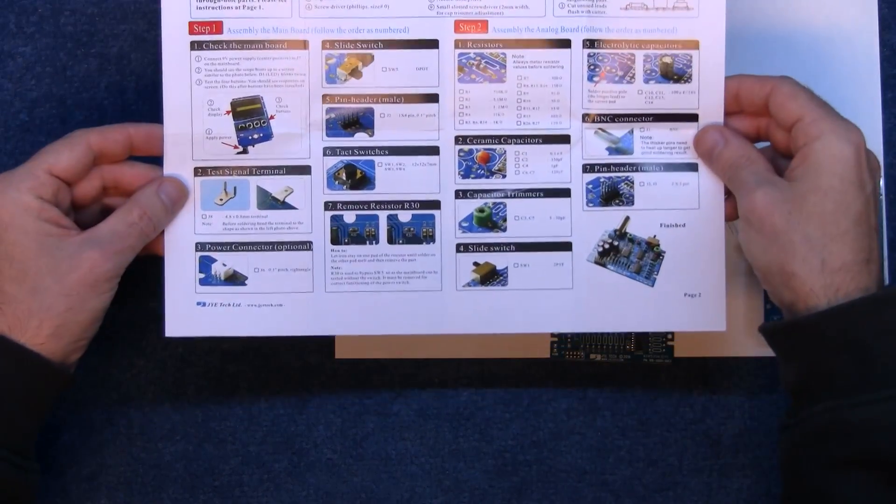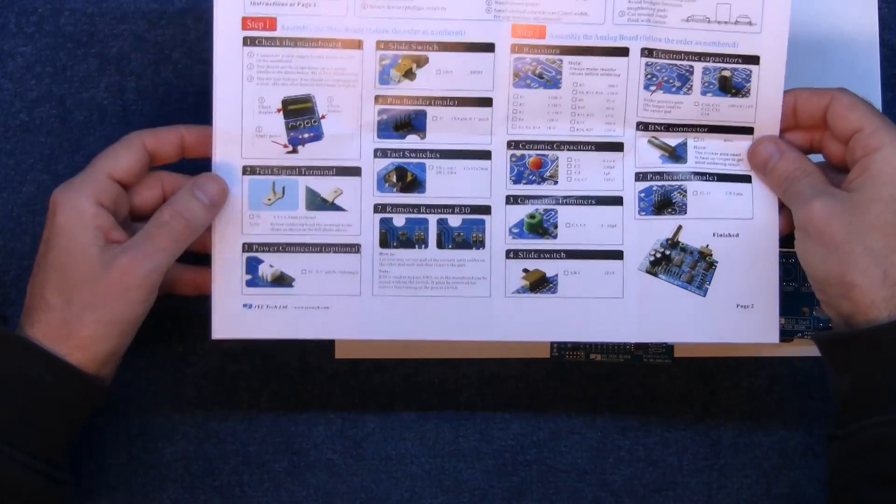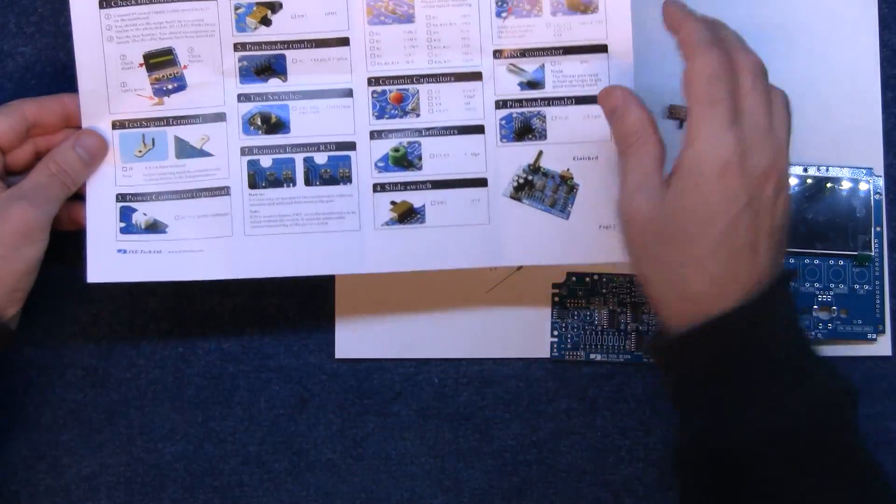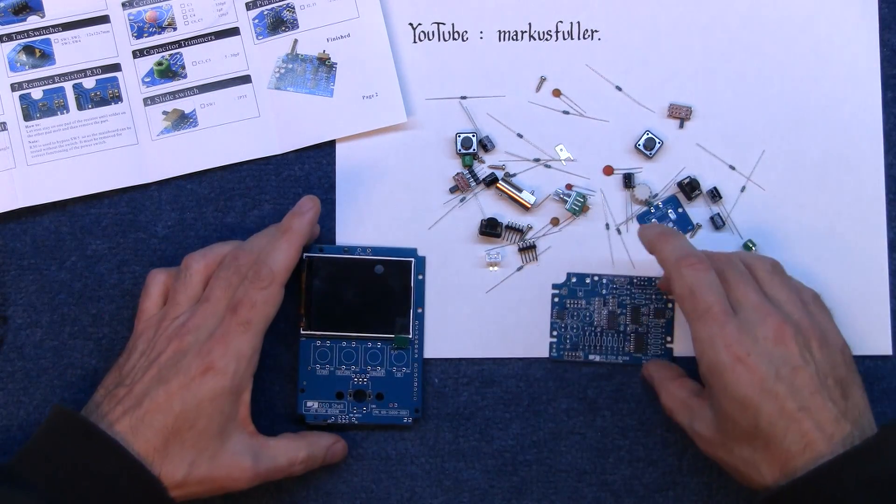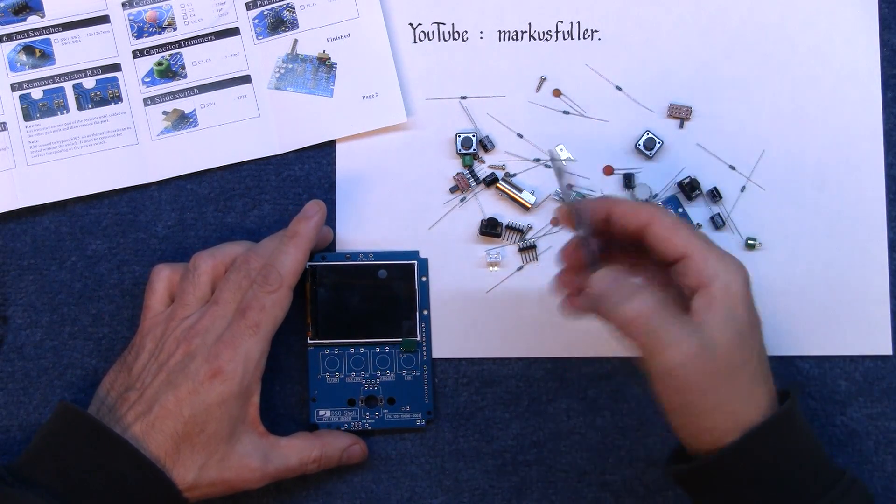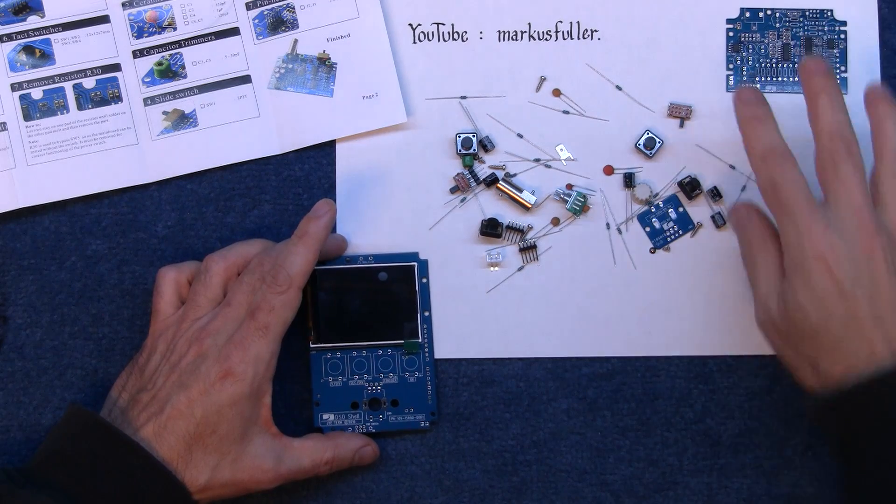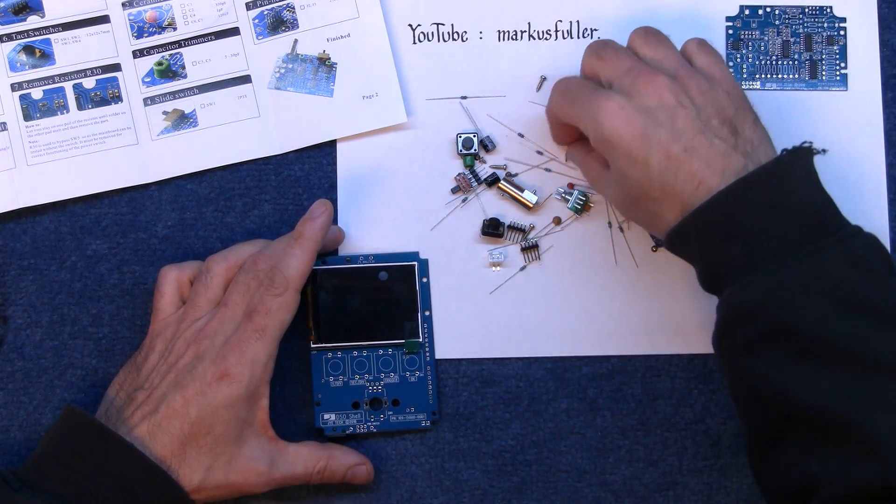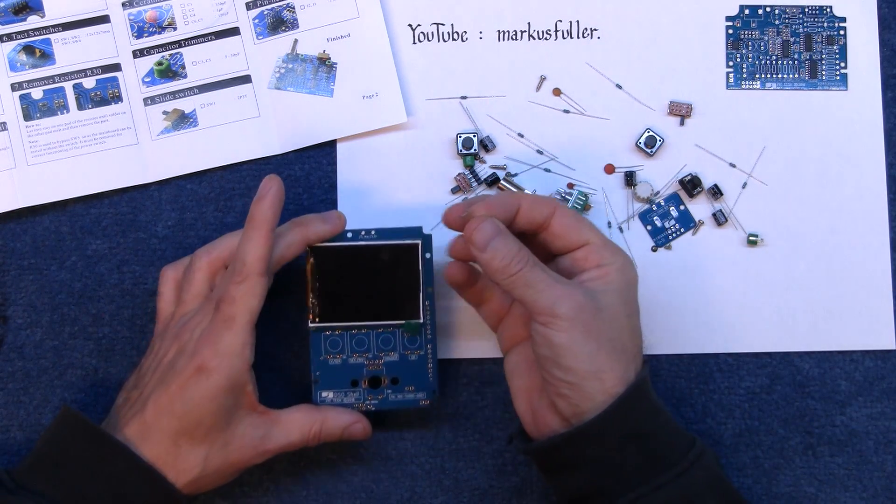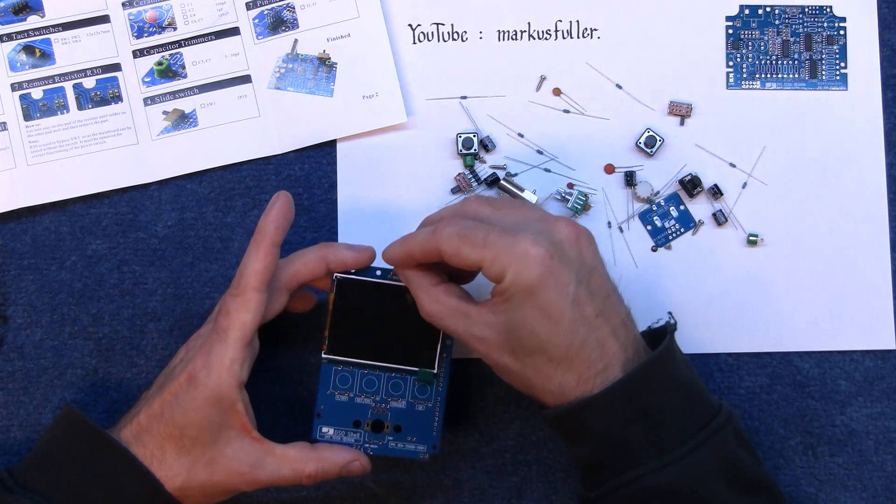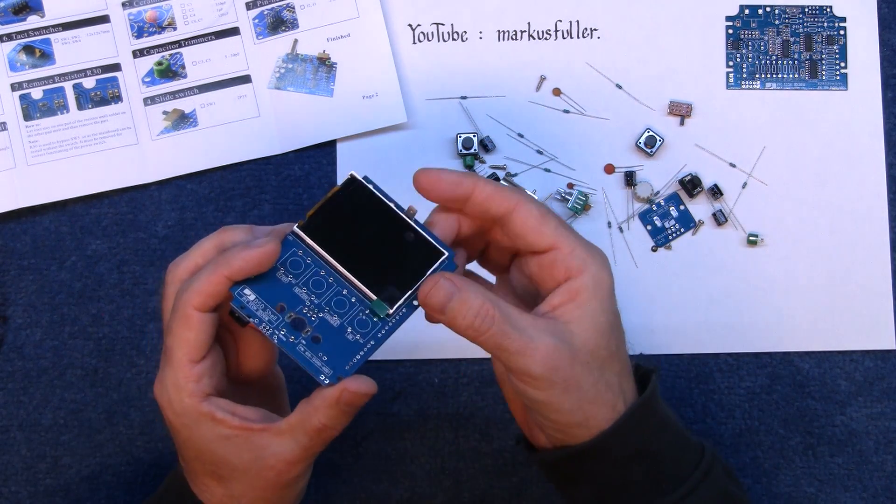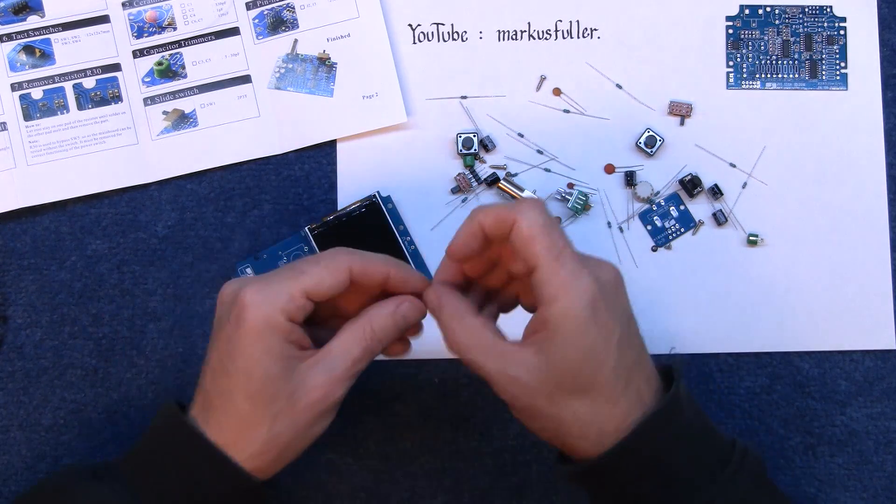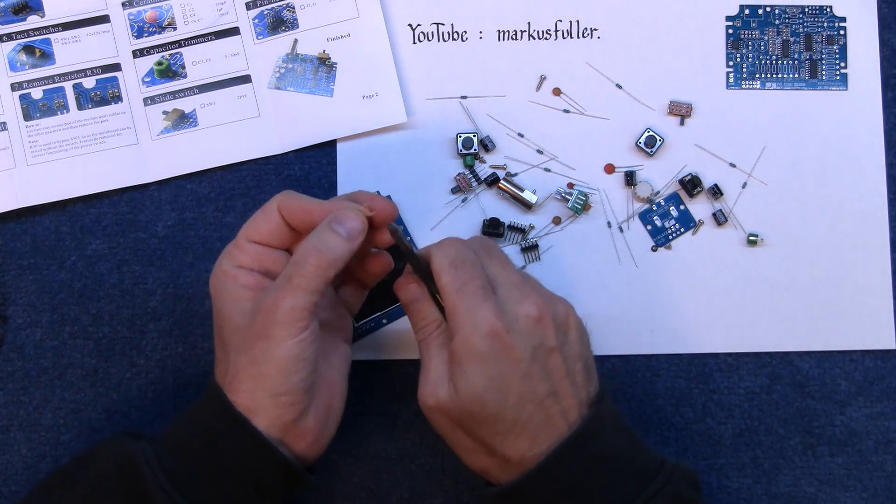So first thing, test signal terminal just here and it looks like I have to bend the pins on there. This is the main board, that's the analog board. We'll come back to that later. So that looks like this and where's that going? That's going to go up here but I've got to bend it into place. I'll speed these bits up for you.